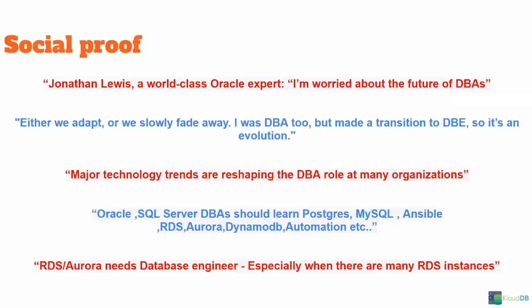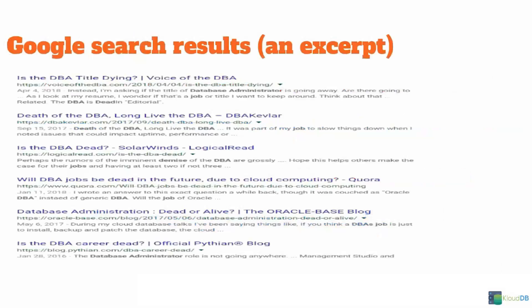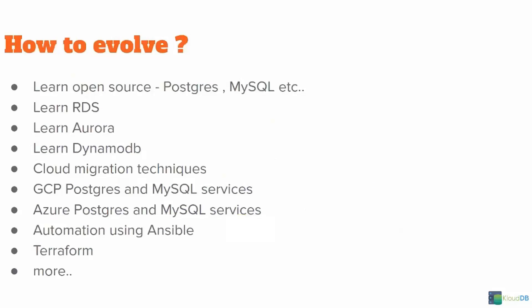Major technology trends are reshaping the DBA role at many organizations. Oracle and SQL Server DBAs should learn Postgres, MySQL, Ansible, RDS, Aurora, DynamoDB, Automation, etc. RDS Aurora needs database engineers, especially when there are many RDS instances. A Google search for 'death of the DBA' or 'DBA title dying' will yield many results. So how do we evolve? Learn open source — Postgres and MySQL; learn RDS, Aurora, DynamoDB; cloud migration techniques; GCP Postgres and MySQL services; Azure Postgres and MySQL services; and automation using Ansible, Terraform, and more.